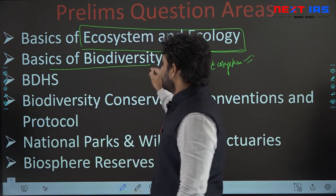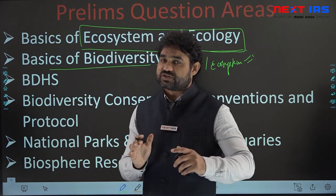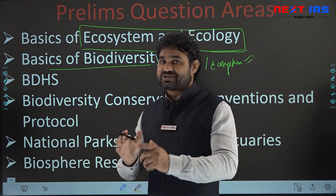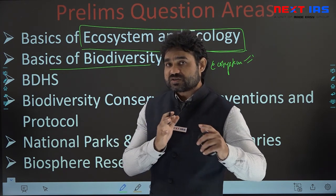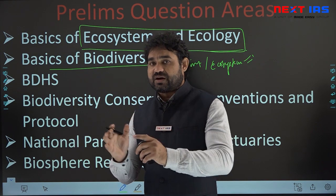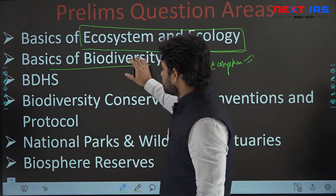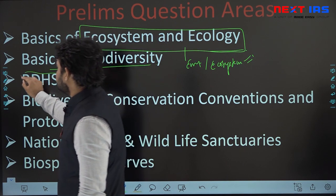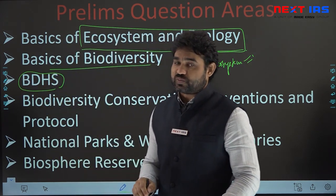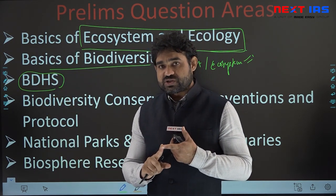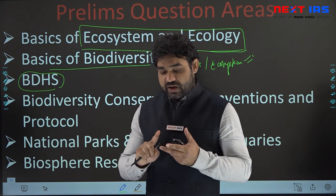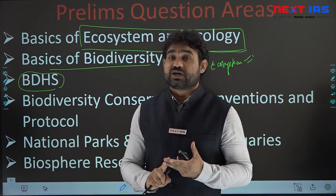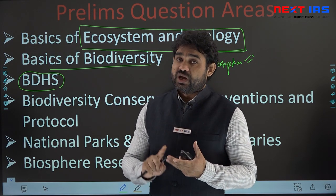Next is the basics of biodiversity. Questions here are principally with respect to types of biodiversity — genetic, species, and ecosystem biodiversity — and similarly alpha, beta, and gamma biodiversity. One very important area from where questions come is biodiversity hotspots: what they are, where they are located, and what are the significant flora and fauna species in those hotspots.